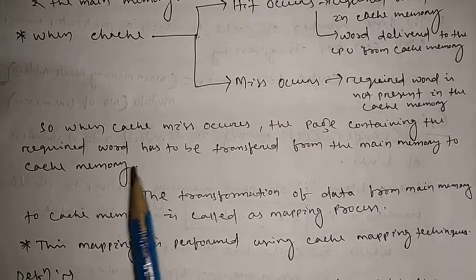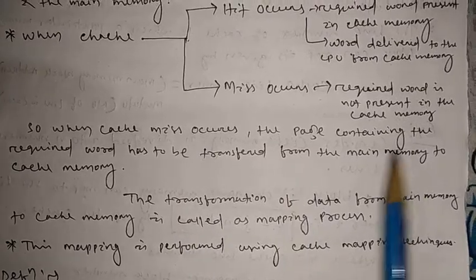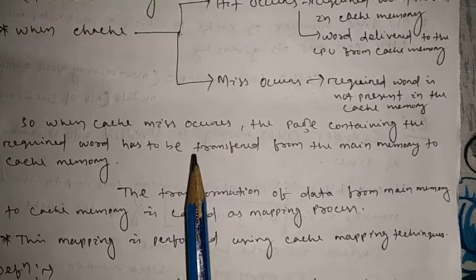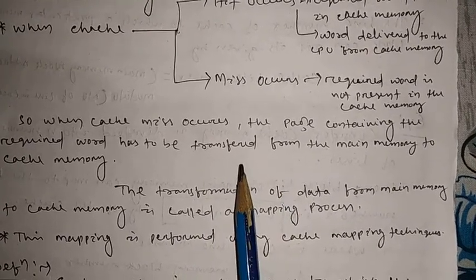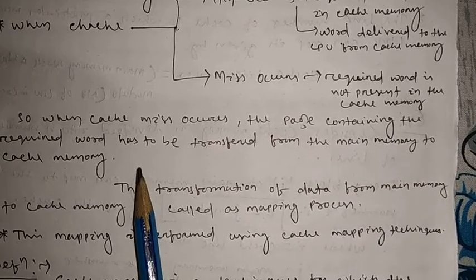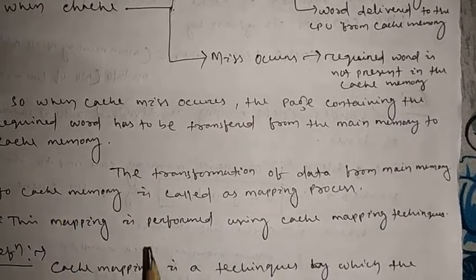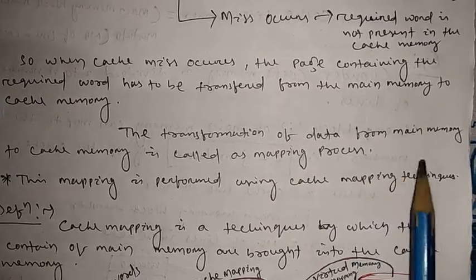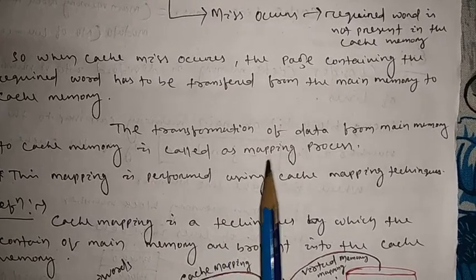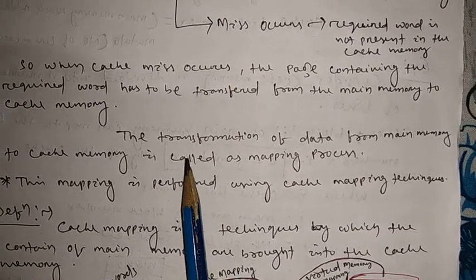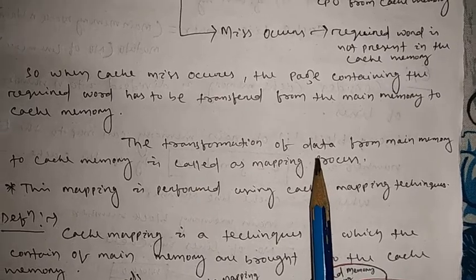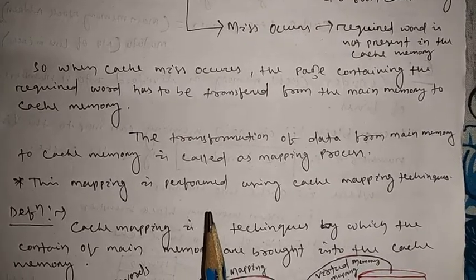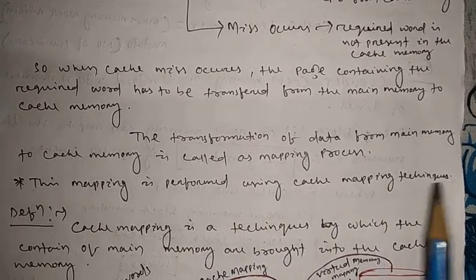When a cache miss occurs, the page containing the required word has to be transferred from the main memory to cache memory. If the data is not inside the cache memory, then whatever information is required by the CPU — it will go to main memory, and that data from main memory will be transported to cache memory and accessed by the CPU. The transformation of data from main memory to cache memory is called the mapping process.